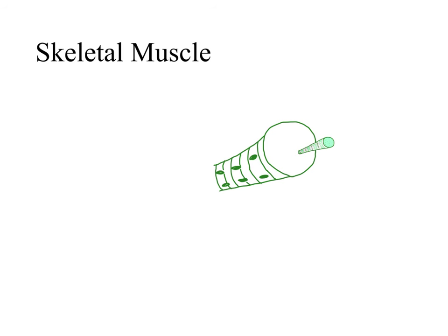Thick filaments are composed of the myosin protein, and thin filaments are composed of actin protein, and also those regulatory proteins — troponin and tropomyosin. This is within a skeletal muscle cell. I just drew one myofibril with myofilaments inside it. Myofilaments are the filaments, which makes you recall that the filaments are the thin filaments and the thick filaments. When we look inside a skeletal muscle cell, we see several myofibrils, which again are composed of the thin and thick filaments.